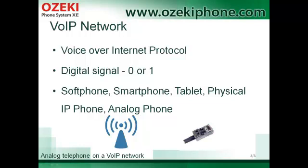In information technology, digital signals generally have two values: 0 and 1. In a VoIP network you can use a lot of client types — for example, a softphone, a smartphone, a tablet, physical IP phones, or analog phones can be IP phones as well. These phones connect to the computer network with a wireless connection or an RJ45 connector.